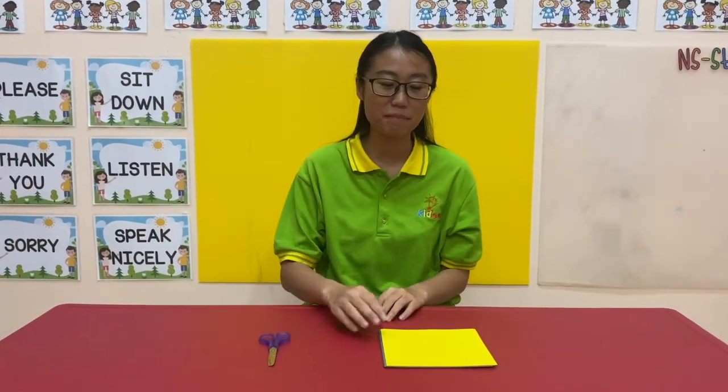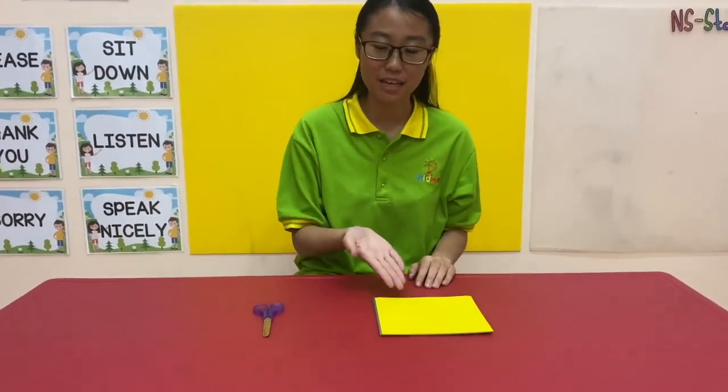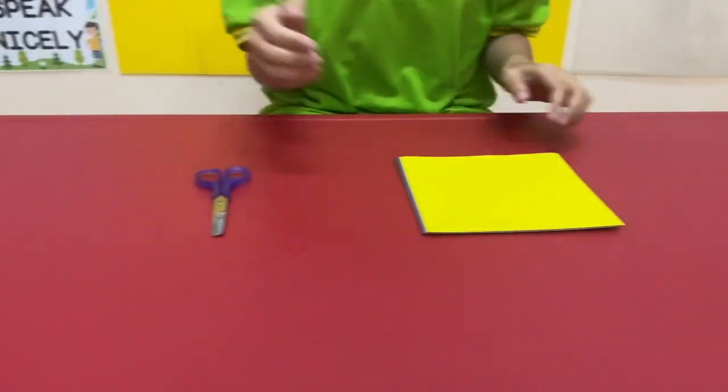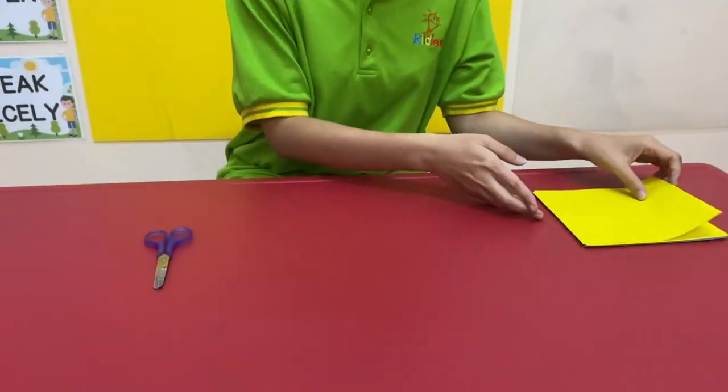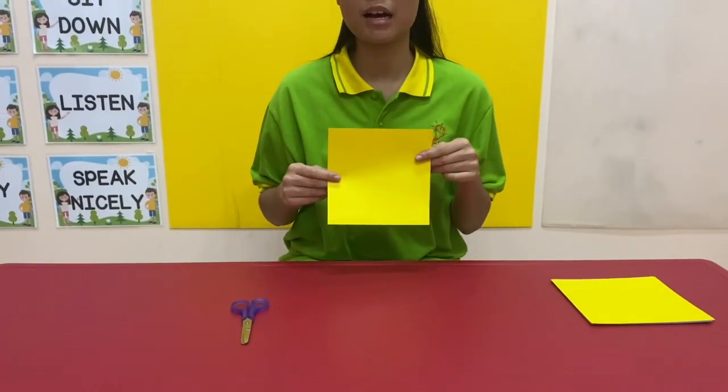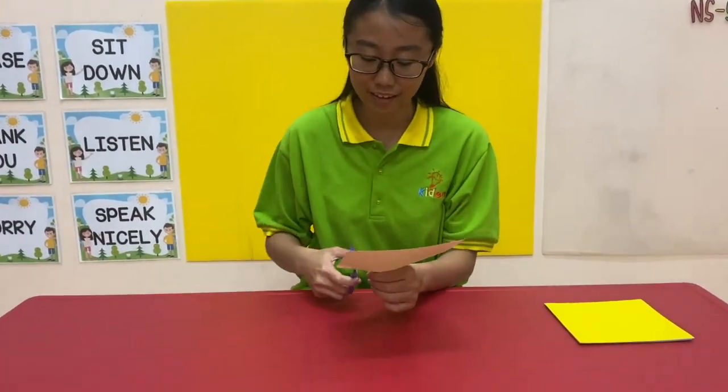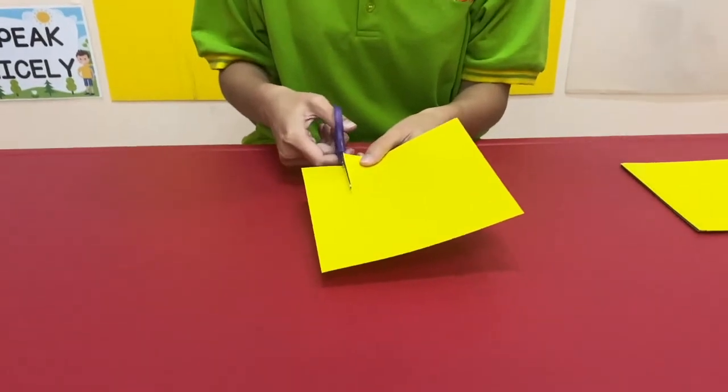Hello children, welcome back. Today we're going to make a paper boat. First you need origami paper and a scissor. The first thing you need to do is cut the paper because to make a paper boat you need the shape to be a rectangle.